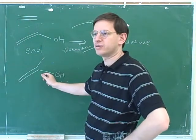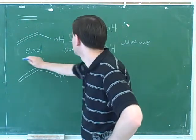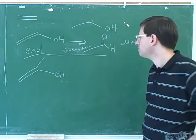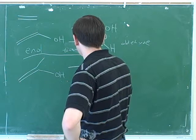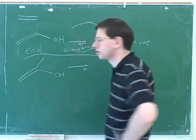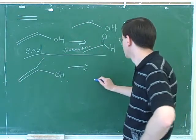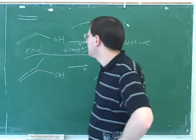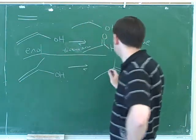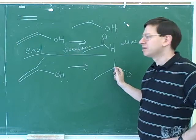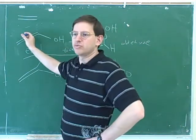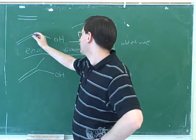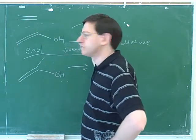So what would this tautomer arise into? That would become a ketone. Basically what's happening is that the alcohol carbon is turning into a carbonyl carbon and you're losing the alkene. We're losing the alkene and the alcohol carbon is turning into a carbonyl carbon.